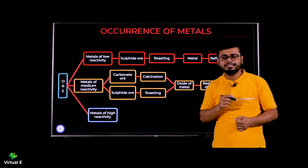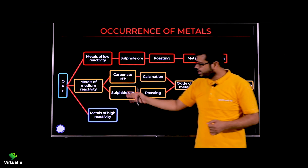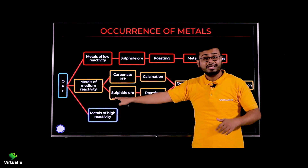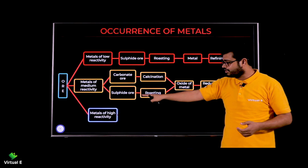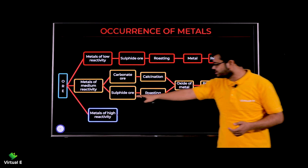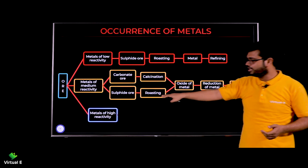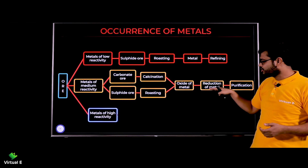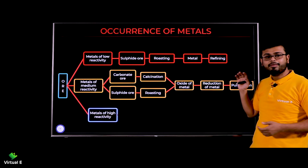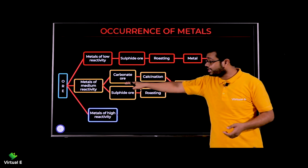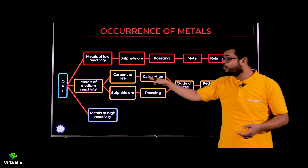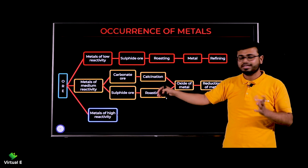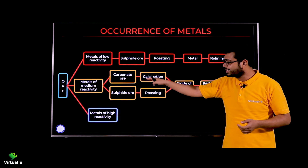For metals of medium reactivity, you may encounter carbonate ore as well as sulfide ore. If it is a sulfide ore, you do roasting to get the oxide of metal, then reduction of metal, and then purification. For carbonate ore, you perform calcination — we will discuss these two interesting terms — then get the oxide, then reduction of metal, and finally purification.